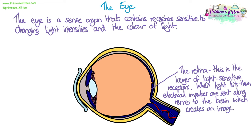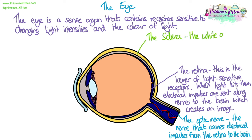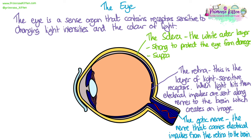Here is the optic nerve — that's where all of those nerves that carry the electrical impulses from the retina travel down to the brain. The sclera is the white outer layer of the eye that you can see as part of your eyeball. It's strong to protect the eye from damage and it helps to support all the structures inside.